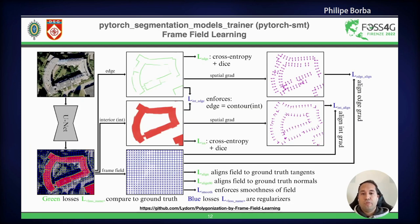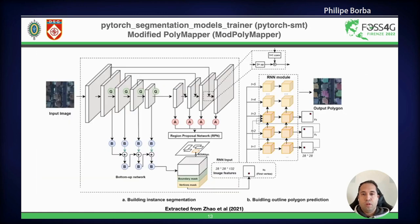The FrameField Learning model was one of the key models used in this research. It is composed of a UNet with a ResNet-101 backbone, coupled with a FrameField module that learns a complex vector field. It has 9 losses, each looking at a particular aspect of the building. The FrameField is used in post-processing to produce better building edges. We also implemented the ModPolyMapper, which combines an RNN that infers polygon vertices with an object detection network.